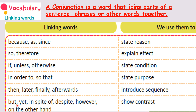Let's move on to the next one: but, yet, in spite of, despite, however, on the other hand. All these linking words show contrast. Contrast is nothing but the opposite of that. Let's make some examples. 'I rushed to the railway station, but I missed the train.' I rushed — but that shows contrast — the opposite of what you'd expect.